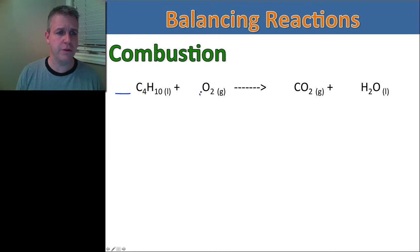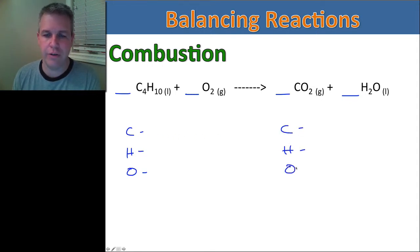Now combustion reactions can be, I think they're the more difficult ones to balance. Mostly because we have oxygen in two different places in our products. And that tends to be a little bit more difficult to balance. But there is a trick that we're going to use that I'm going to show you that will help you balance these. So the first thing I'm going to do is just write down a spot, leave a spot where I'm going to write my coefficients.